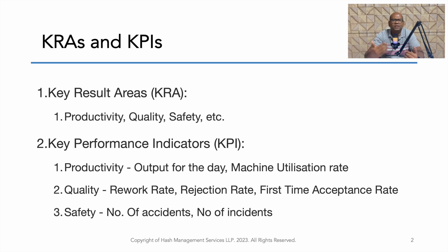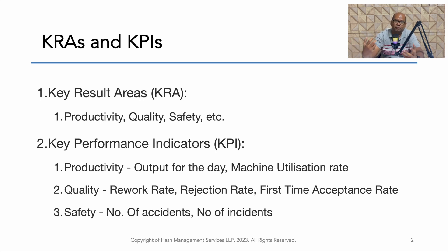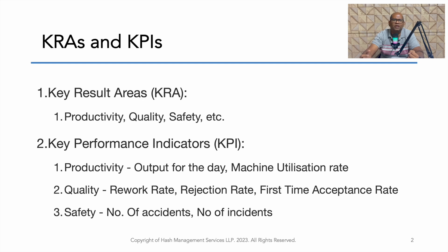For quality, the rejection rate, rework rate, and first time acceptance rate are some indicators. For safety, number of accidents, number of incidents, and how many people are using personal protective equipment — that can be a good KPI. So KPIs are the indicators which help you in measuring the result, and KRA is the broad, top-level result we are trying to achieve.